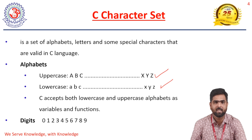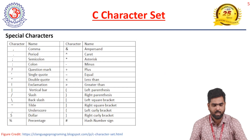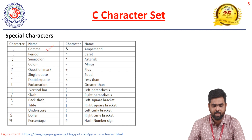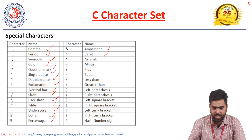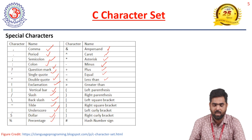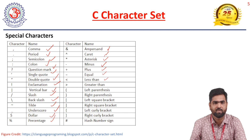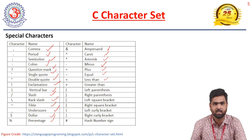Both uppercase and lowercase are accepted in C language and both are treated as different. For digits, we can use 0 to 9. For special characters, we have comma, period (dot), semicolon, colon, question mark, single quote, double quote, exclamation mark, vertical bar, slash, backslash, tilde, underscore, dollar, percentage, ampersand, caret, asterisk, minus, plus, equal, less than, greater than, left and right parentheses, and left and right square brackets. Most symbols on the keyboard are valid special characters in C.